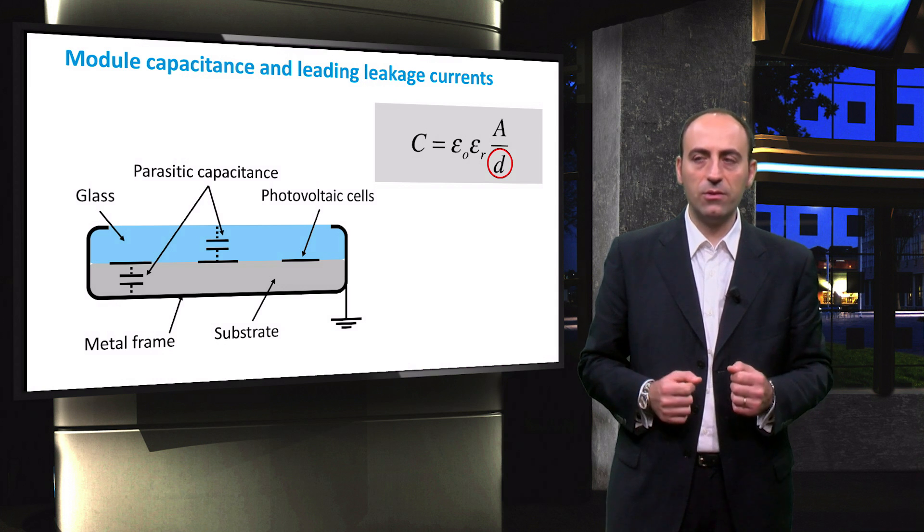The value of the capacitance is also dependent on the atmospheric conditions, mostly dust and humidity. The top of the module, which is covered with glass, is non-conductive when clean and dry. On heavy rain days, this part becomes conductive due to the presence of water and mineral salts accumulated on top of it. The effective area of the capacitor increases significantly, causing the capacitance to increase.